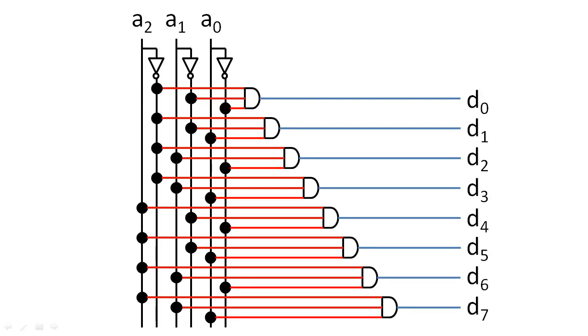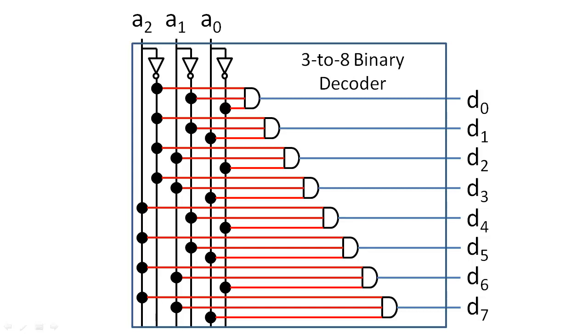We call this circuit a binary decoder because it decodes a binary input into a series of ones and zeros on a set of data outputs. The first number in the name tells us about the number of bits in the binary code, and the second number in the name tells us about the number of data lines that are decoded.